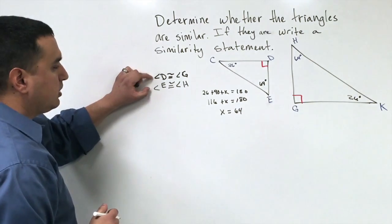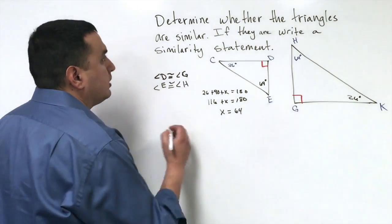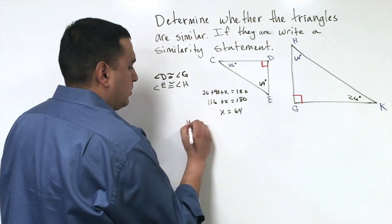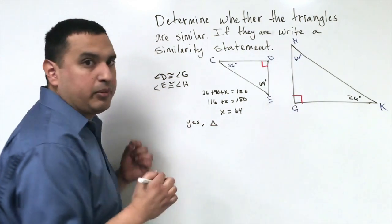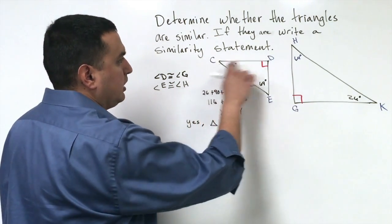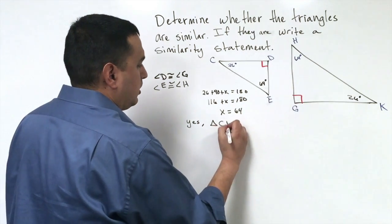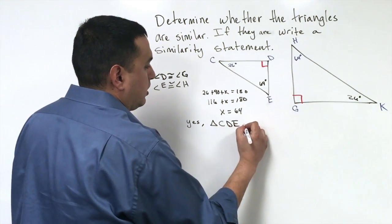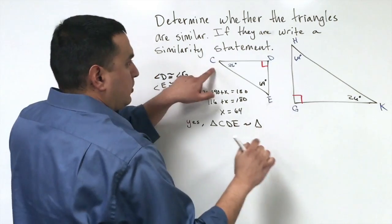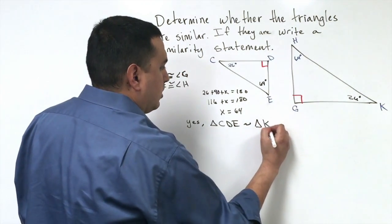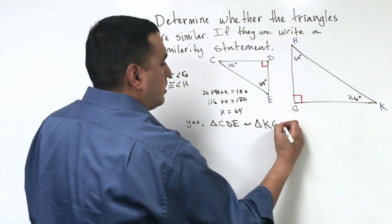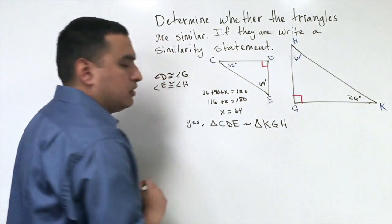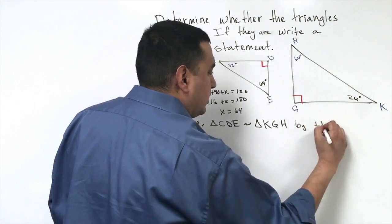So because I have these two pairs here, then I would say, yes, triangle. Now remember, the order matters. So if I go C, D, E, then I have to say, C corresponds to K. So this is going to be triangle K, G, H.